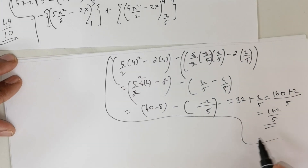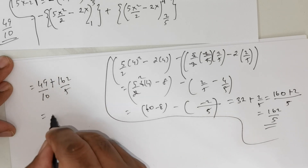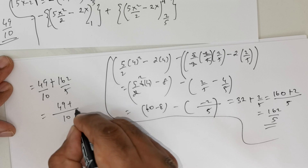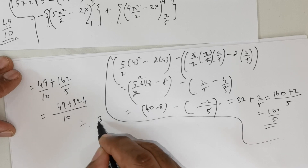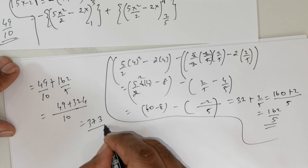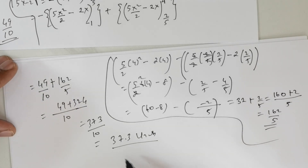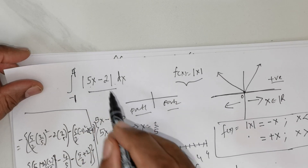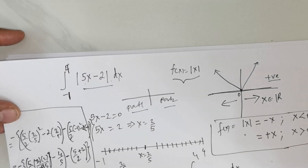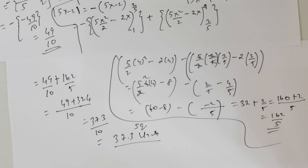Adding the two parts together: 49/10 plus 162/5. Taking LCM as 10: 49/10 plus 324/10 = 373/10, which equals 37.3 square units. This is the area obtained when the function takes the value |5x minus 2|. If you have any questions, please put them in the comment box. Thank you, students.